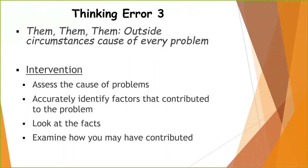Thinking error three: 'Them, them, them' — as opposed to 'me, me, me.' The person has a very external locus of control and believes that outside circumstances cause every problem. Encourage them to look at all the causes and contributing factors. What are the facts for and against the belief that you had no part in this and this was done to you? Examine how you may have contributed and then develop a plan. Likely there are outside circumstances at work, but what part did you have?